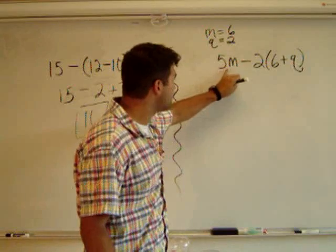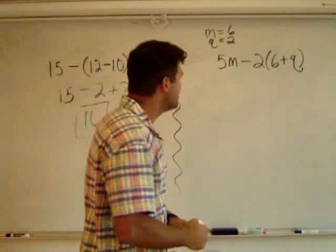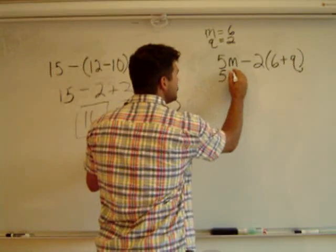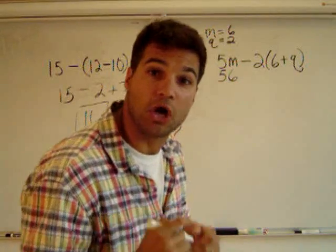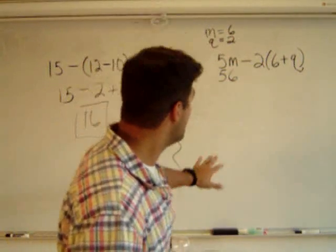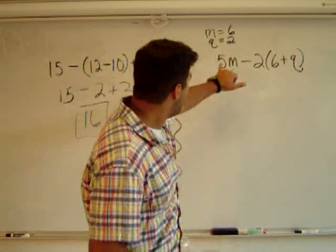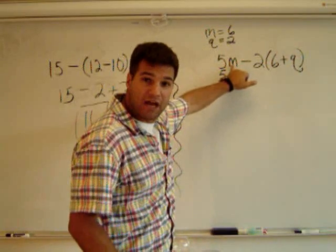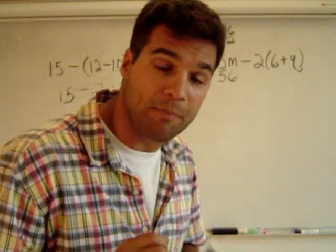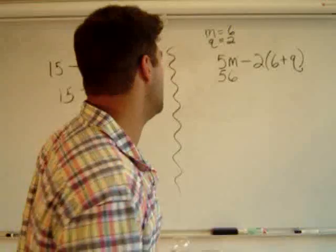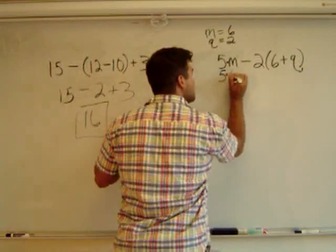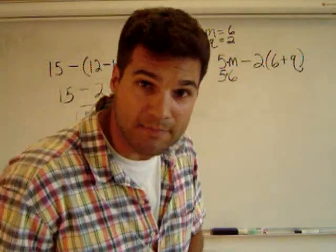But notice the 5 and the m are right next to each other. Does that mean 56? No. It does not mean 56. We try to keep things as short as possible in algebra. So when you don't see a sign between a number and a variable, it's implied that it's multiplication. Multiplication is the only operation that doesn't need a sign. So this is actually multiplication. So it's actually 5 times 6.